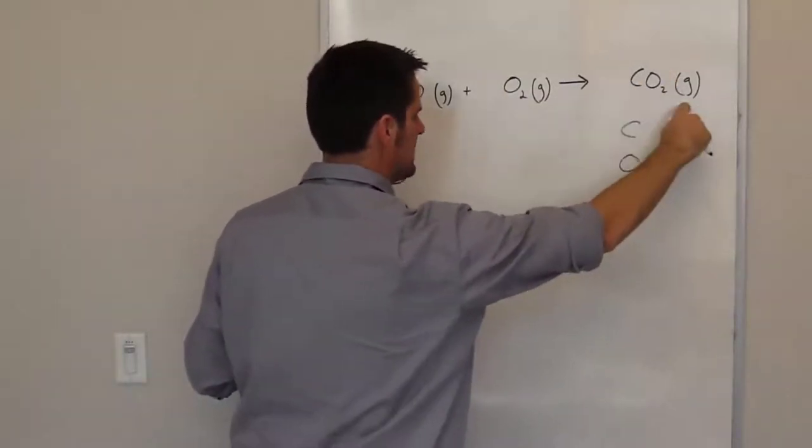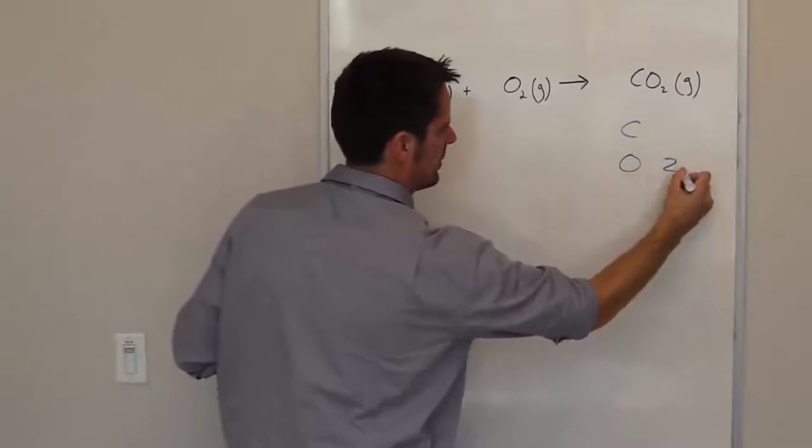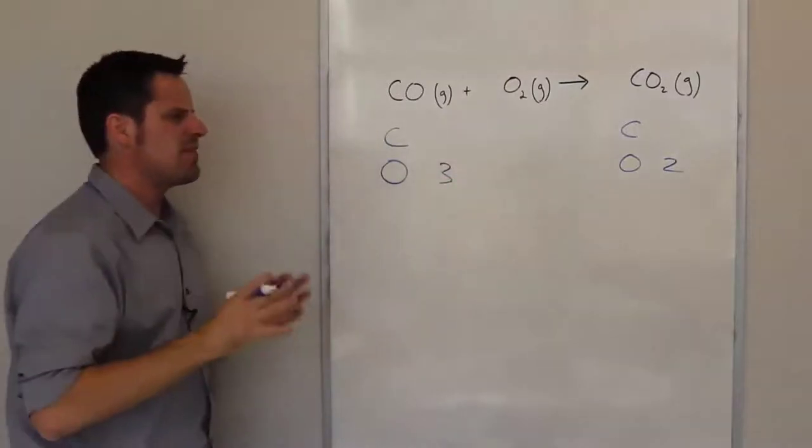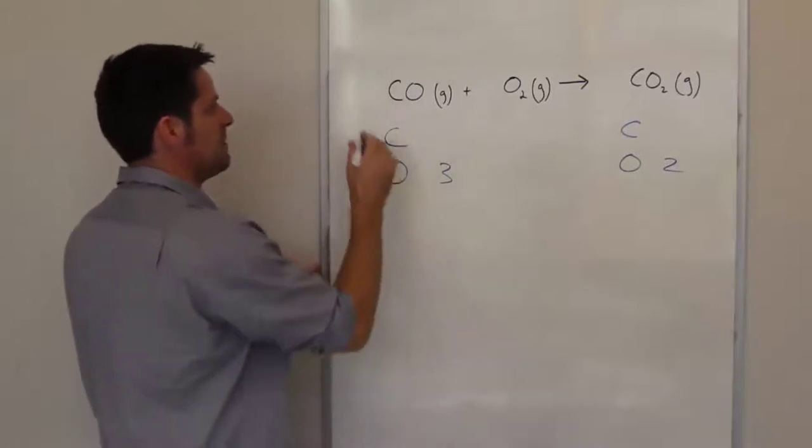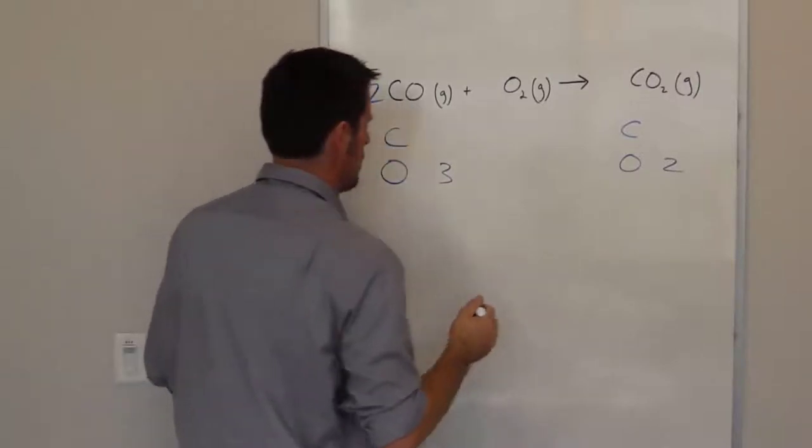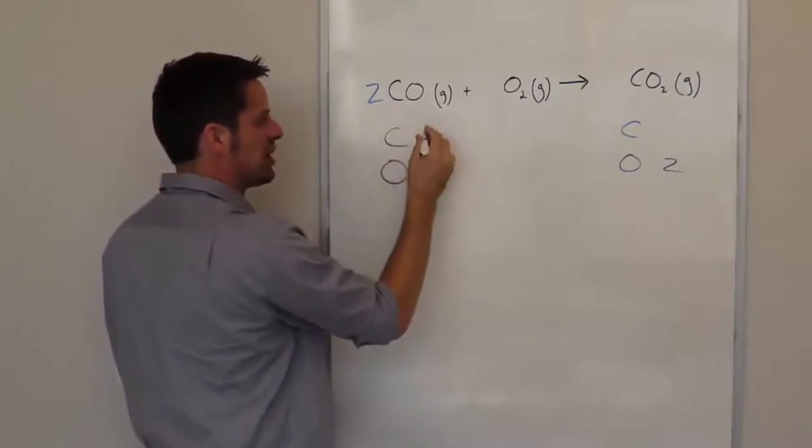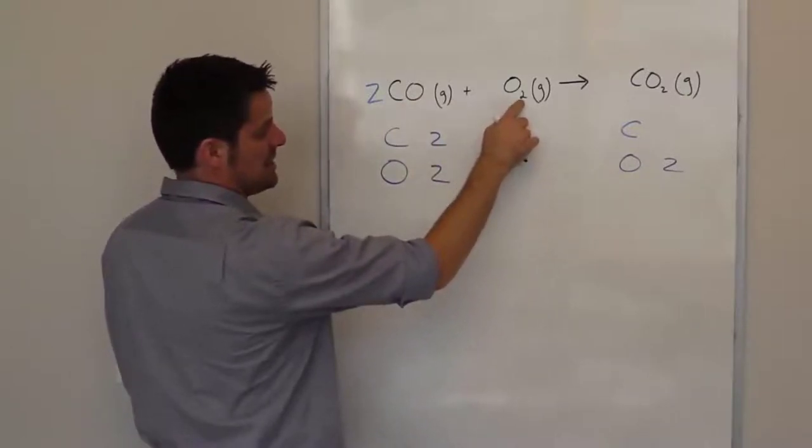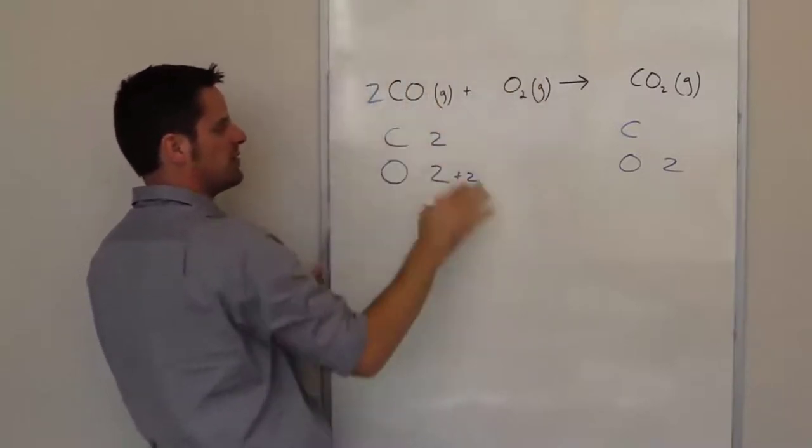One of the challenging things here is that I've got an even number of oxygens on the right and an odd number on the left. I've got two on the right and three oxygens on the left. Whenever you have an even and odd issue, the best way to resolve it is to put a two next to whichever substance has the odd number of atoms. Now I have two carbon atoms and two oxygen atoms here, plus these two oxygen atoms, which gives me a total of four oxygen atoms on the left.